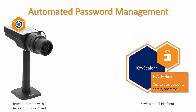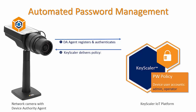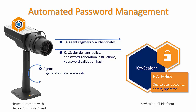The Device Authority agent on the camera registers and authenticates with the Keyscaler IoT platform. Keyscaler delivers the policy back to the agent. It includes password generation instructions and a password validation hash. The agent generates new passwords and validates the password against the hash it received.